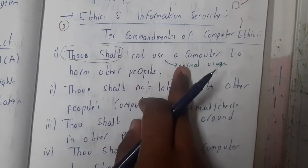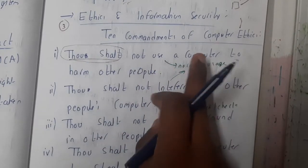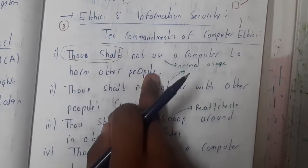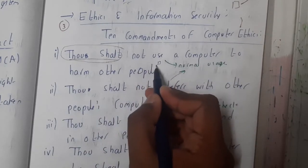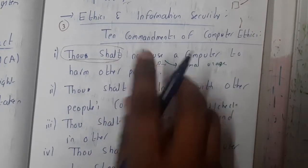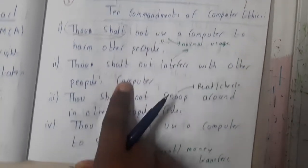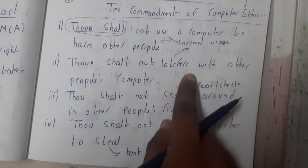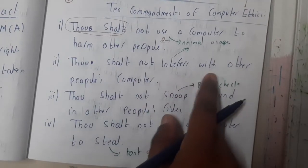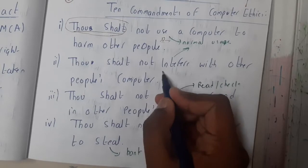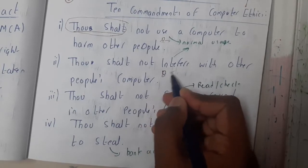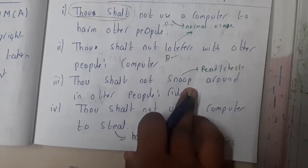The first commandment: do not use a computer to harm other people — never use a system to harm someone. The second: do not interfere with other people's computers, do not use other people's computers.